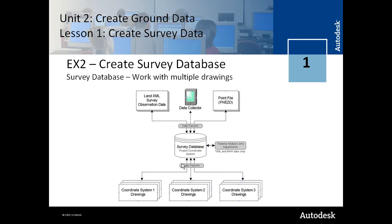The survey database can be at a specific project coordinate system. And when you move data from the database, you can move it to any drawing via a data transfer, and a coordinate transformation occurs. The software will compare the coordinate system assigned to the database against the coordinate system assigned to any one of the drawings and convert the data. So it's a very powerful way to represent data in multiple coordinate systems.